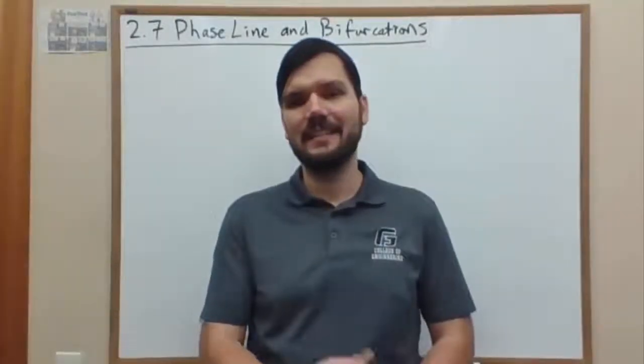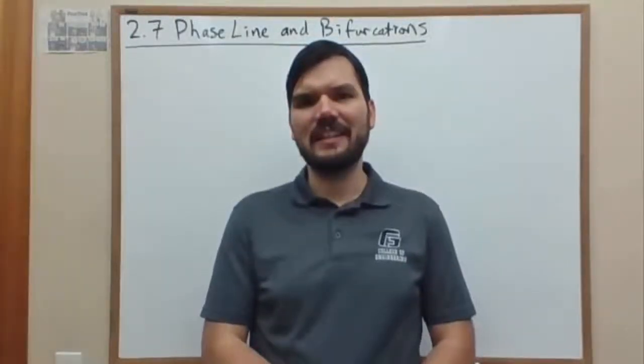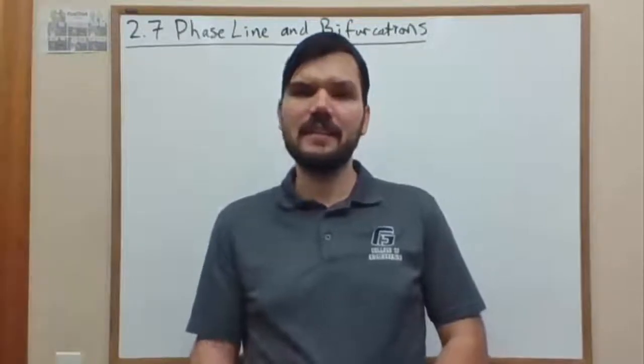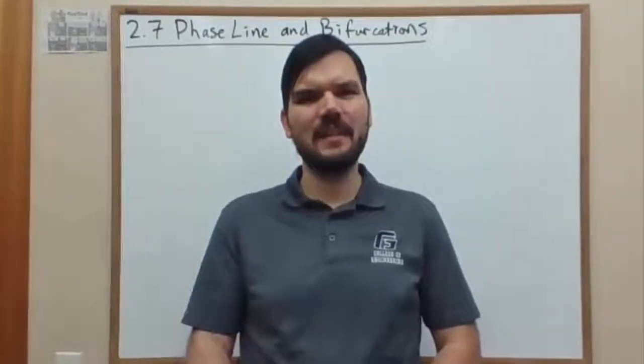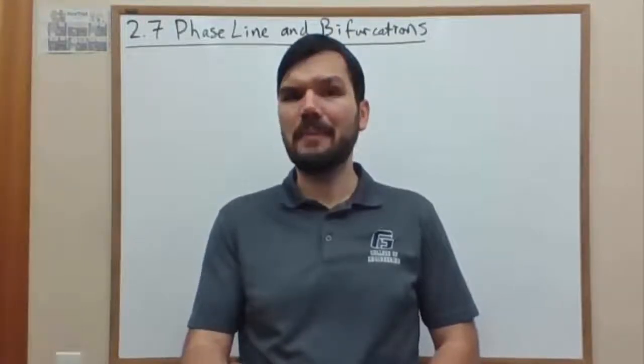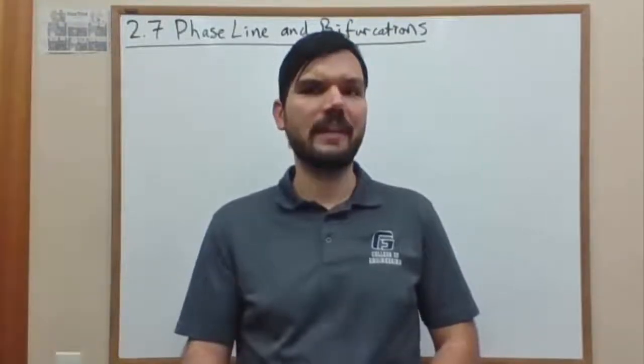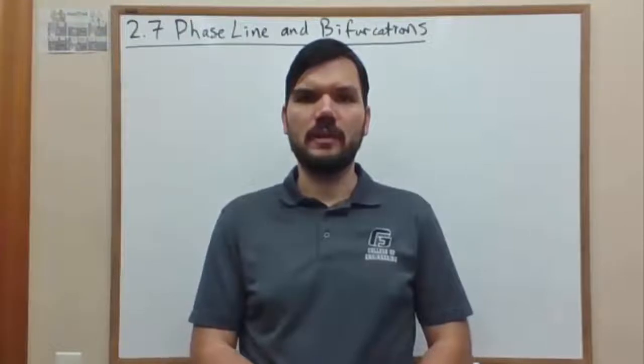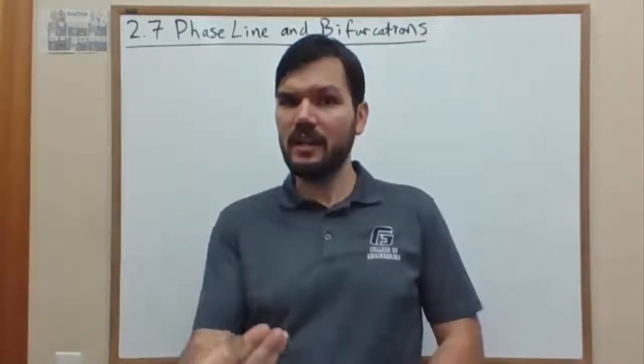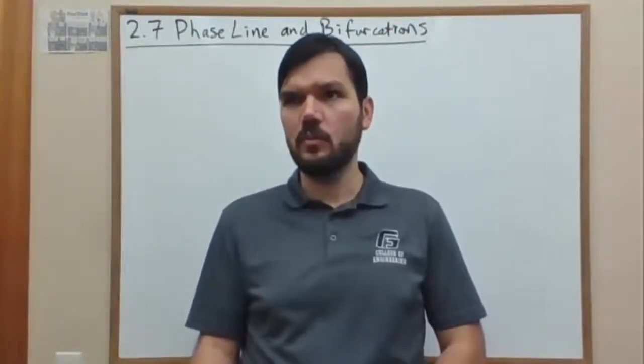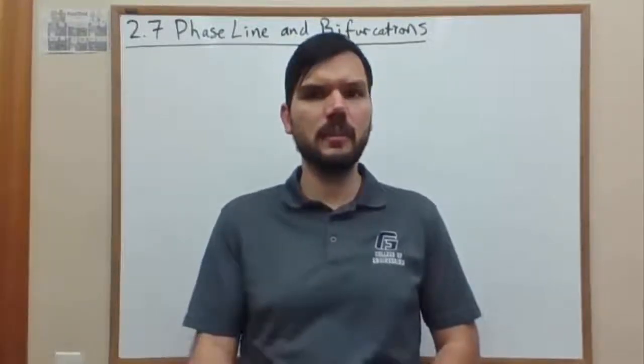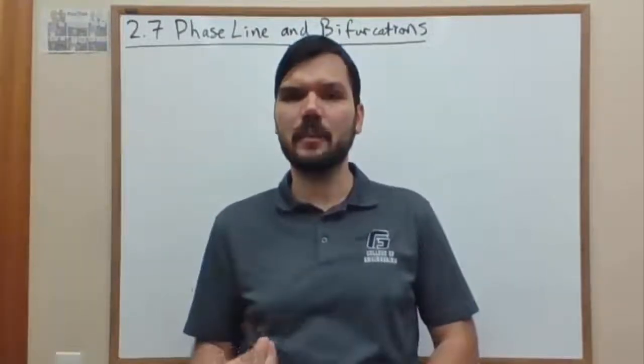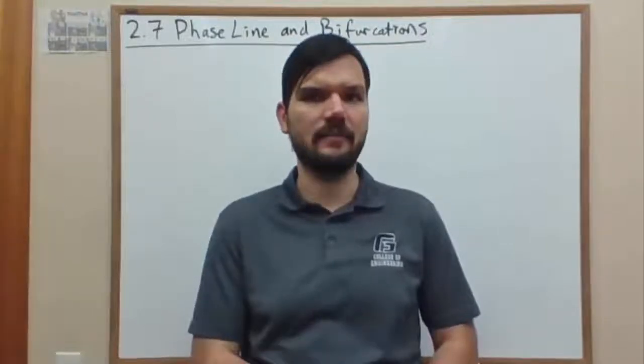Welcome back. We're going to look at the phase line for an autonomous differential equation and the possibility of bifurcation or multiple bifurcations, which is where a parameter change in value will create either a change in the number of equilibrium points or the type of those equilibrium points you have, or both.